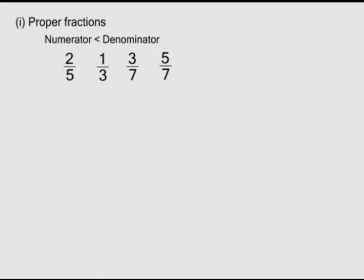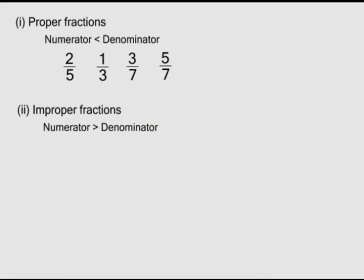If, on the other hand, the numerator is larger than the denominator, the fraction is called an improper one. For example: two over three, five over four, nine over two, and so on. An improper fraction is larger than one.